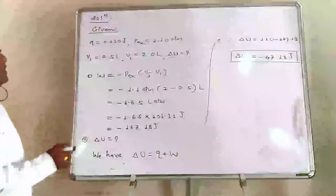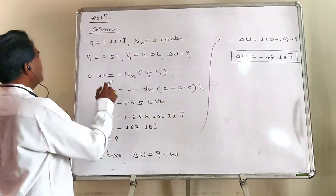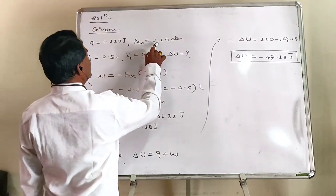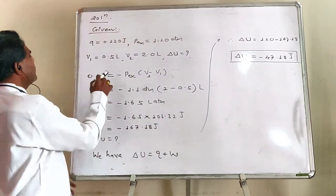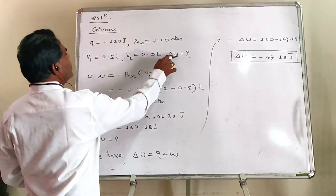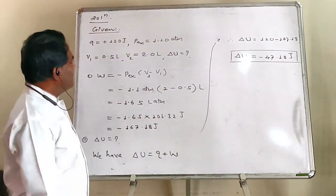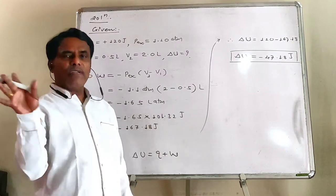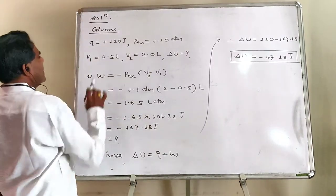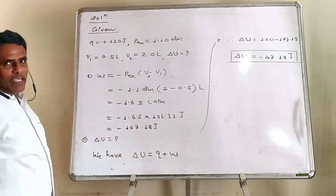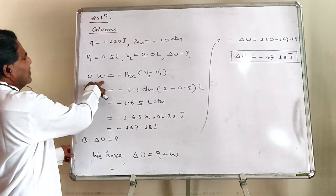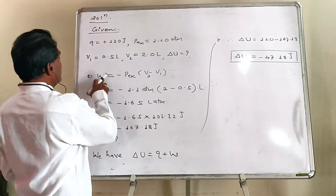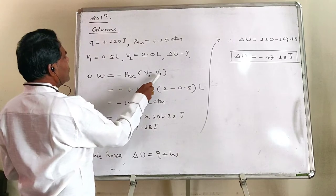Next problem. See, what we are given in this problem? Heat absorbed by system is 120 joules. External opposing pressure is 1.10 atmosphere. Gas expands from half a litre to 2 litres. And we have to find out internal energy change. Right? Yaan bhi expansion of gas ho ta hai? It is isothermal and irreversible process. Because reversible word is not there. And we have to find out internal energy change.